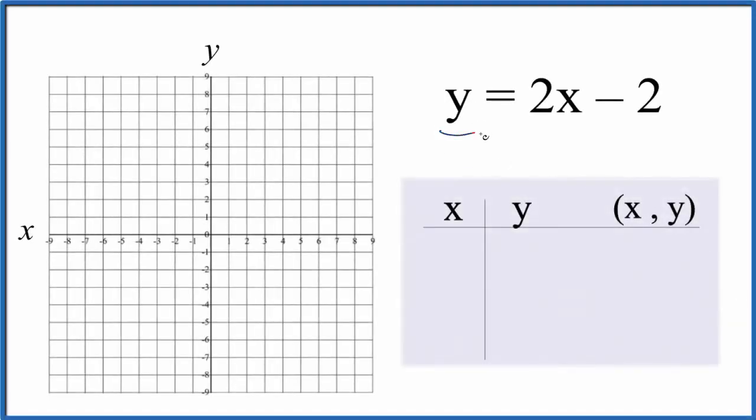Let's graph the linear equation y equals 2x minus 2. We'll do it two ways. First we'll put in values for x, find the corresponding values for y, and then graph those on our graph here. Next we'll use the slope-intercept formula y equals mx plus b to check our work.